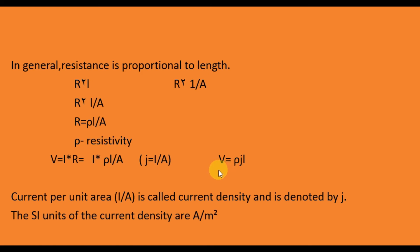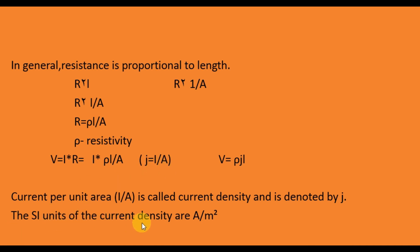So the voltage V = ρJL, where J = I/A is the current per unit area, called the current density, denoted by J. The SI unit of current density is ampere per metre squared (A/m²).